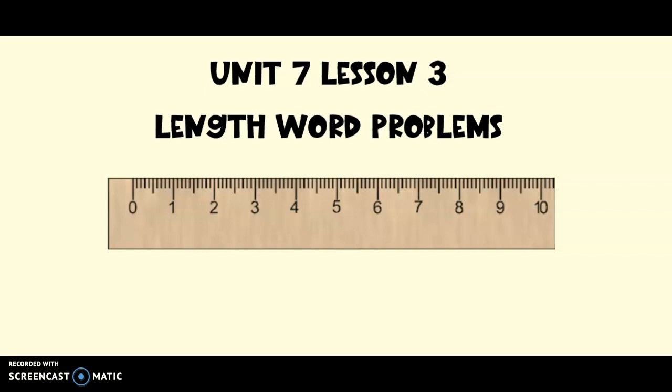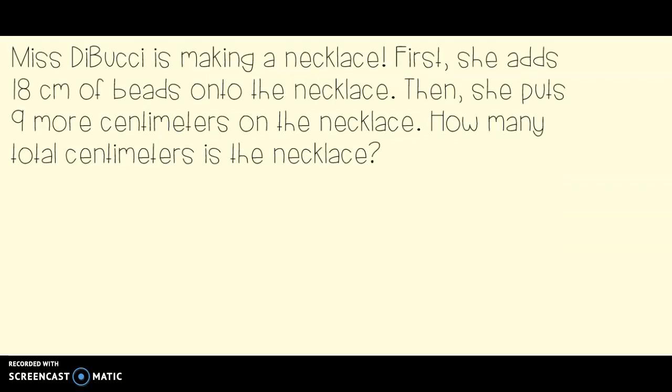Ms. Debussy is making a necklace. First, she adds 18 centimeters of beads onto the necklace. Then, she puts 9 more centimeters on the necklace. How many total centimeters is the necklace? So let's take a look and see what information we know. It says first, she adds 18 centimeters of beads. So that's the first number that we're going to be using. 18 centimeters.